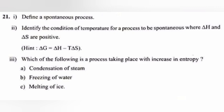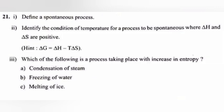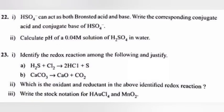2. Identify the condition of temperature for a process to be spontaneous where delta h and delta s are positive. Answer: The process becomes spontaneous at high temperature since delta h and delta s are positive. Delta g becomes negative at higher temperatures. 3. Which of the following is a process taking place with increase in entropy? Answer: c. melting of ice.